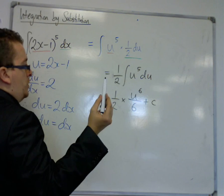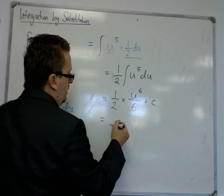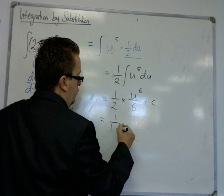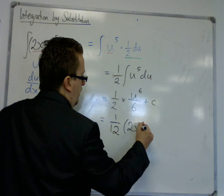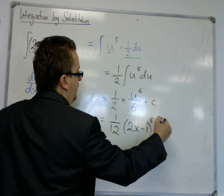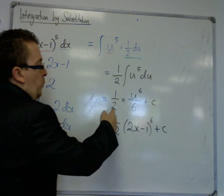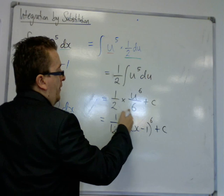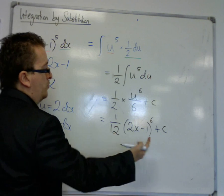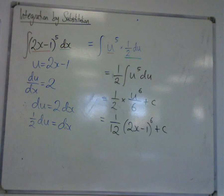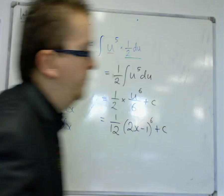So u was 2x-1. So this is 1/12(2x-1)^6 + c. So I've done two steps in one there. The 1/2 times by the 6th becomes 1/12, which I've pulled out the front.